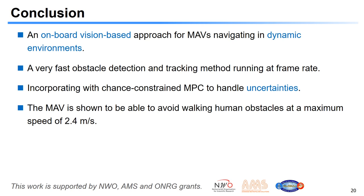In conclusion, we proposed an onboard vision-based approach for MAV collision avoidance in dynamic environments. The approach relies on a fast obstacle detection and tracking method, which can run at frame rate, and chance-constrained model predictive control, which can handle MAV localization and obstacle detection uncertainties. In our experiments, the MAV is shown to be able to avoid walking human obstacles at a maximum speed of 2.4 meters per second. Thanks for your attention.